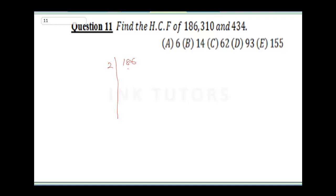2 into 6 would be 3. What can divide again? 3 can go — 3 into 9 is 3, 3 into 3 is 1. Now look at 31 — 31 is a prime number. Prime numbers are numbers that have only two factors: itself and 1. So 31 into 31 would be 1.